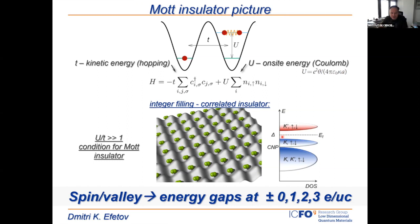When U is much bigger than T and we deal with a fully occupied lattice — integer numbers of electrons per lattice site — we form energy gaps. I also want to mention that in graphene we have fourfold degeneracy: spin and valley degrees of freedom. In principle, whenever we polarize the bands and form a Mott gap, we also create some symmetry breaking and can form magnetic or ferromagnetic states in this SU(4) phase space.